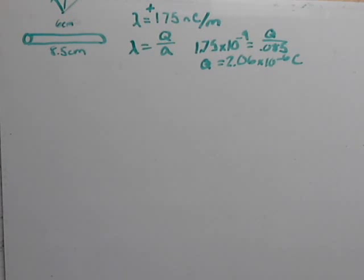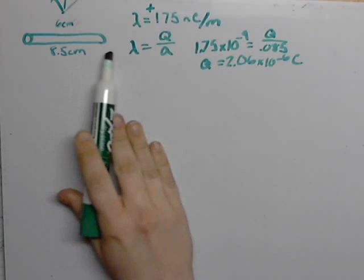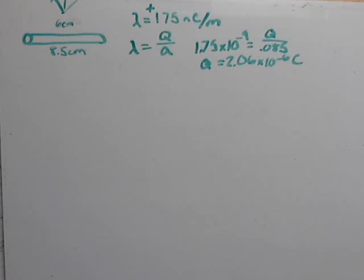Alright, so now that we have our Q, I'm going to refer you to problem number 90 for chapter 21, where I derive general equations to determine what the electric field components are for a straight wire or a straight line of certain density.